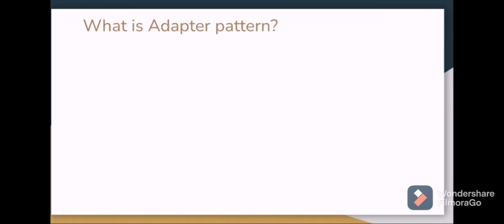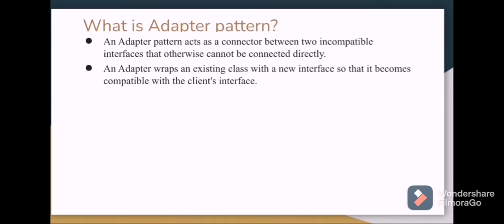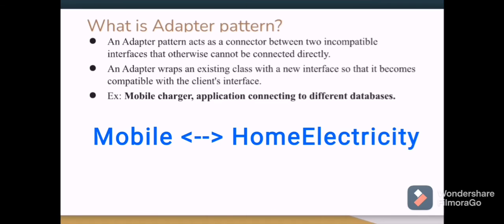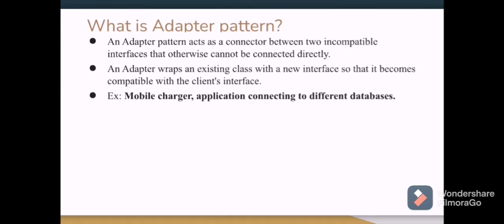What is the adapter pattern? Consider we have two interfaces that are unrelated and cannot be connected. The adapter pattern acts as a connector between these two incompatible interfaces. It wraps an existing class with a new interface so that it becomes compatible with the client's interface — all the connection logic lives in the adapter class. A very good example is a mobile charger: electricity from home is one interface and the mobile is another, and they cannot be connected directly, so the mobile charger acts as the adapter. A real-time application example is connecting to different databases.